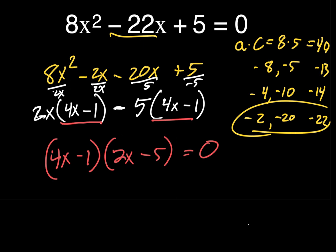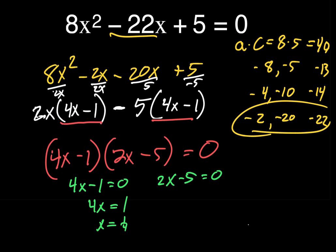It's important to write equals zero because if two things multiply to zero, one of them must be zero. So I set each factor equal to zero: four x minus one equals zero gives x equals one fourth; two x minus five equals zero gives x equals five halves. Those are the zeros, or roots, of the equation — and they're much easier to find once we've factored.